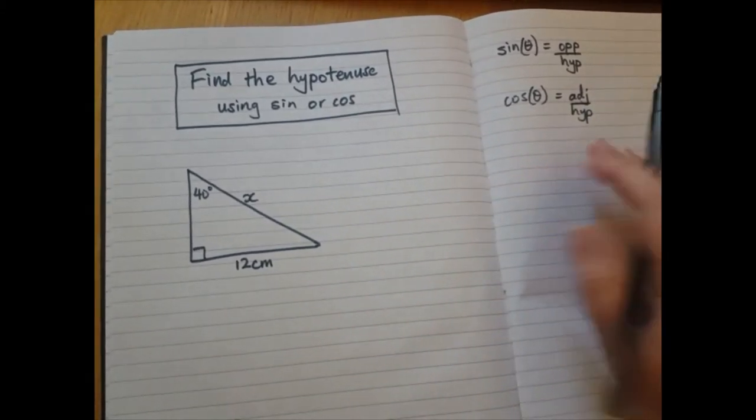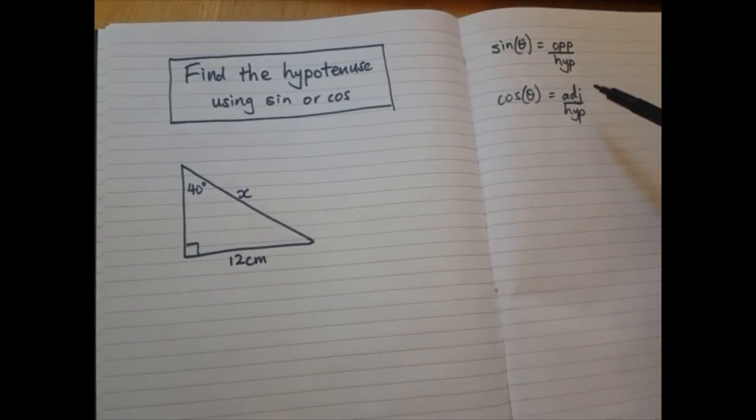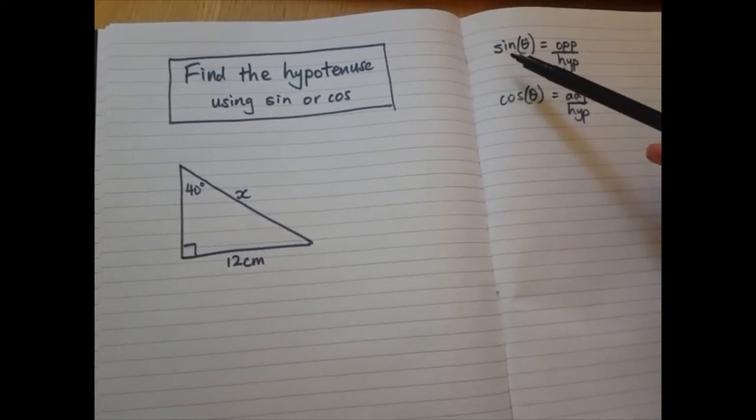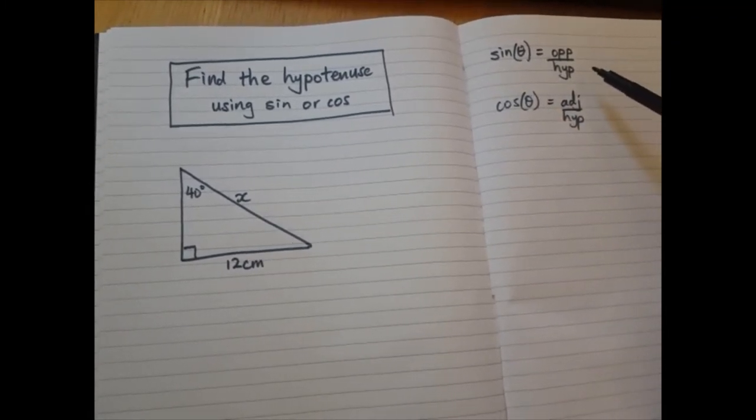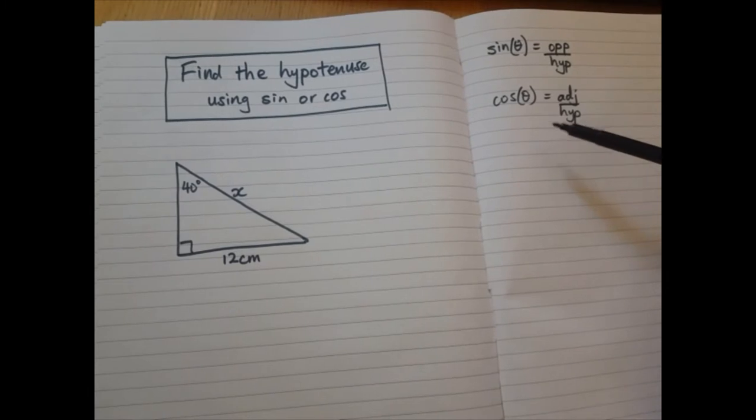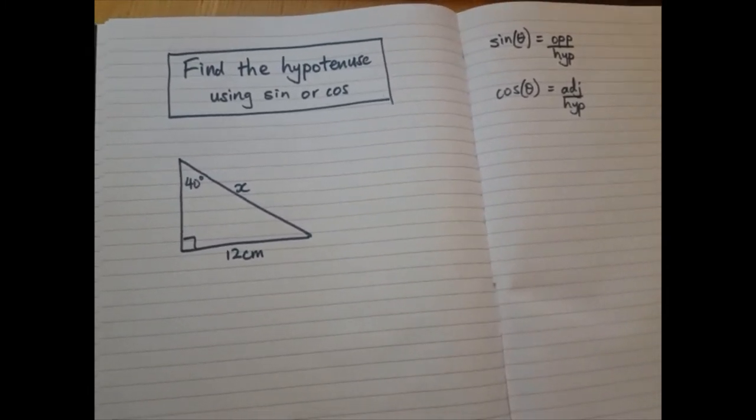So first, let's look at these two ratios that we learned earlier. We learned that sine of the angle is opposite divided by hypotenuse, and cos of the angle is adjacent divided by hypotenuse.